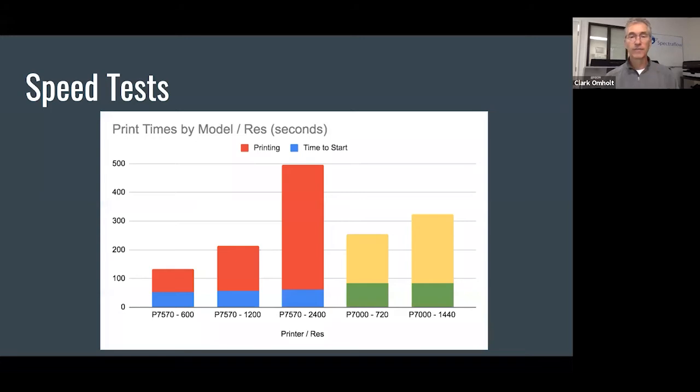This is just a diagram with the same info. You can see that if you compare the 7570 at 600, the time to start printing is faster, as well as the print time is substantially faster.